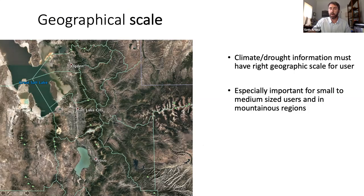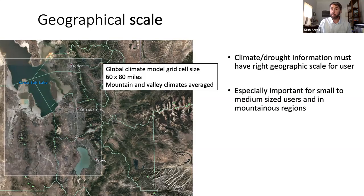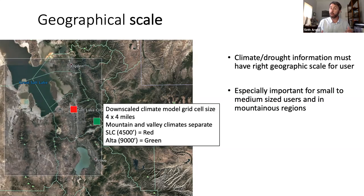First, talking about scale — I'm really talking about geographical scale, and I'm going to use global climate models as a great example. This is a map of Salt Lake Valley in Utah. Climate and drought information really needs to be at the appropriate scale. Global climate models typically have grid cells of 60 by 80 miles. In the mountainous west, this is not a useful scale. Here in Salt Lake Valley, that incorporates parts of the Wasatch Mountains, the Ochre Mountains, the Great Salt Lake, Salt Lake County, and Utah County — so on the scale of an individual water provider, climate information of this sort is not useful. We use downscaled climate information, using statistical methods to give information on a four by four mile grid cell, where we can give information about climate in Salt Lake Valley at 4,000 feet and up in the mountains at 9,000 feet.